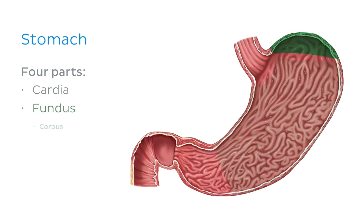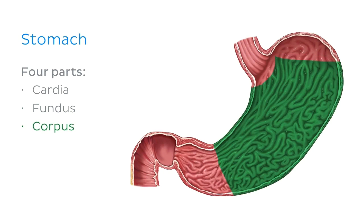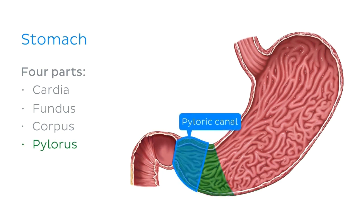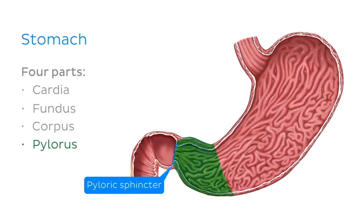The largest division of the stomach is the corpus, meaning the body of the stomach. This is where most of the mixing and churning occurs. And finally, we have the pylorus, which is composed of two parts: the pyloric antrum, which is followed by the narrower pyloric canal. It terminates at the pyloric sphincter, which opens to move food into the duodenum. It's important for us to know the different parts of the stomach, as each region varies histologically.